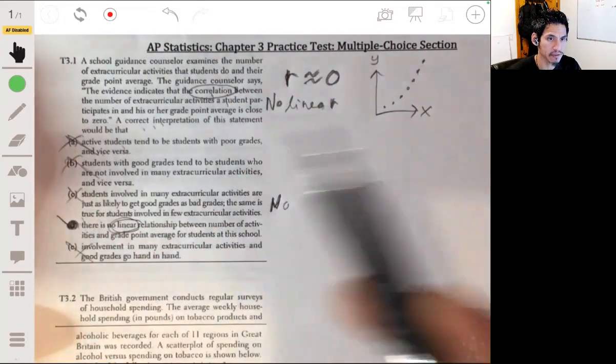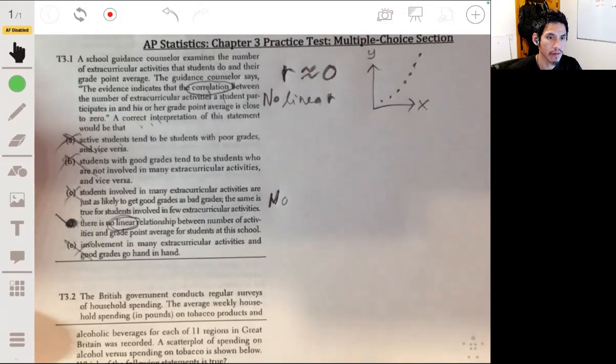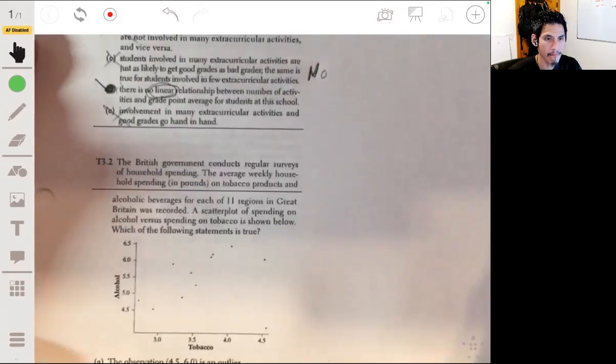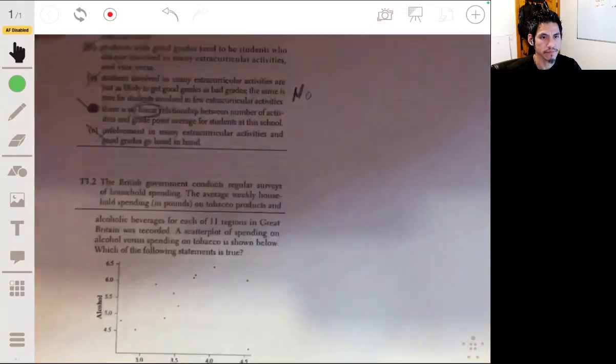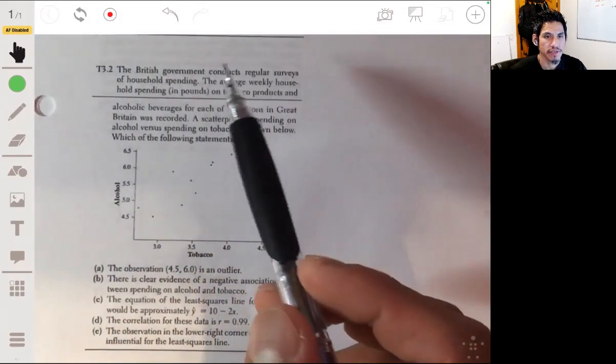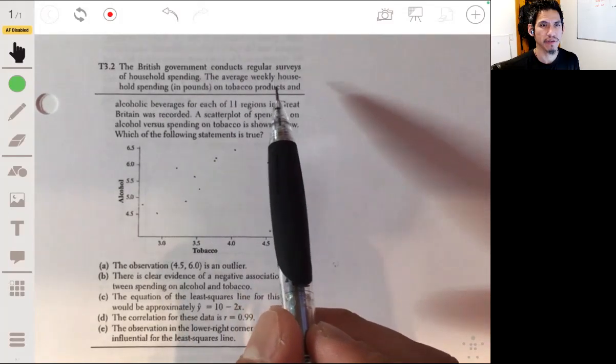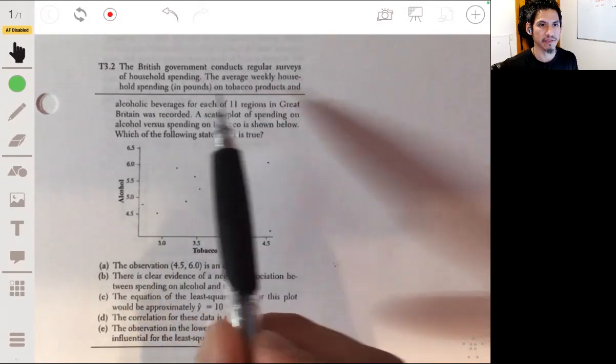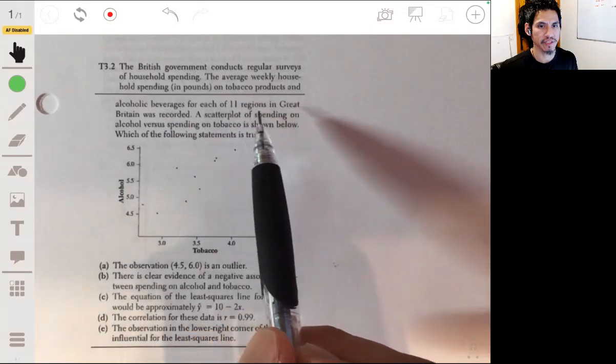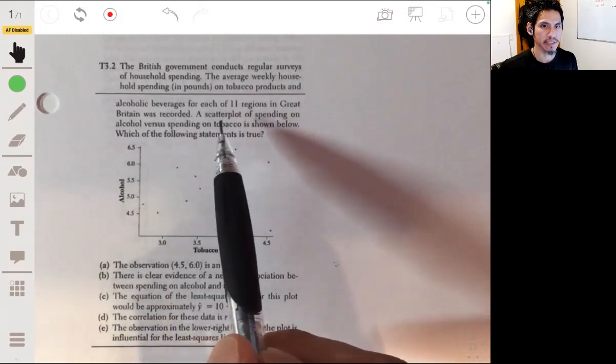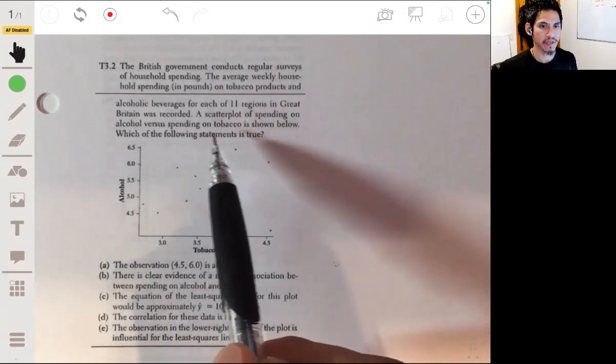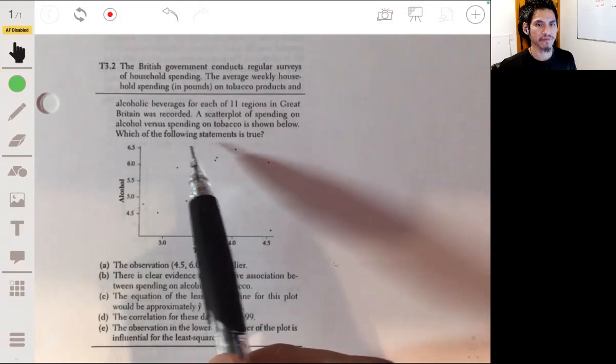All right, number two. Here we have the British government conducts regular surveys of household spending. The average weekly household spending in pounds on tobacco products and alcoholic beverages for each of the 11 regions in Great Britain was recorded. The scatter plot of spending on alcohol versus spending on tobacco is shown below. Which of the following statements is true?